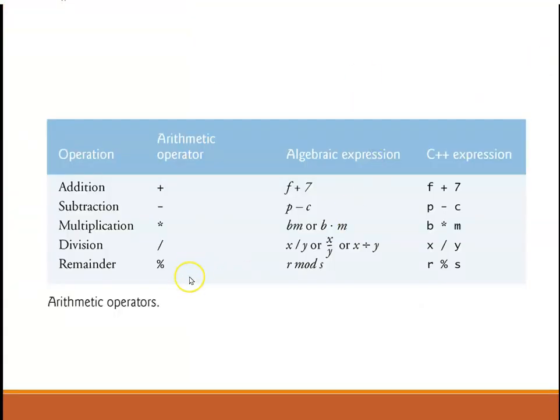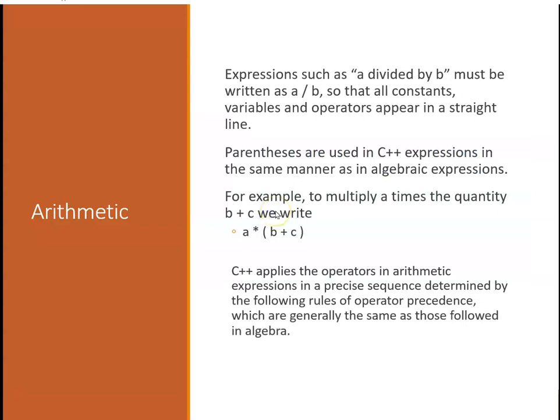Here are common arithmetic operators: plus, minus, multiply, divide, and remainder or mod. Here are the algebraic equivalents and what they look like, and here's the actual C++ expressions. Expressions such as a divided by b must be written as a slash b so that all constants and variables appear in a straight line. You use parentheses just like you do in math to give something a higher priority. For example, if we wanted to say a times b plus c, we could write it with parentheses around b plus c so that b plus c will be executed first.